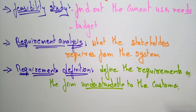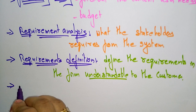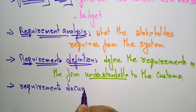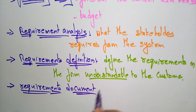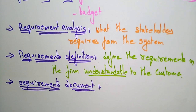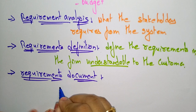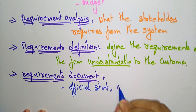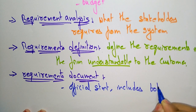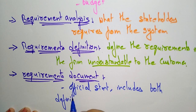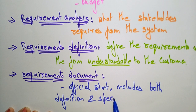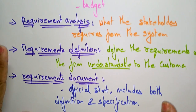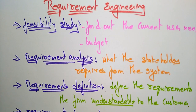Next is the requirements document. The requirements document is nothing but it is an official statement, just like an SRS. It includes both definition and specifications, just like the software requirement specification. This is about requirement engineering, thank you.